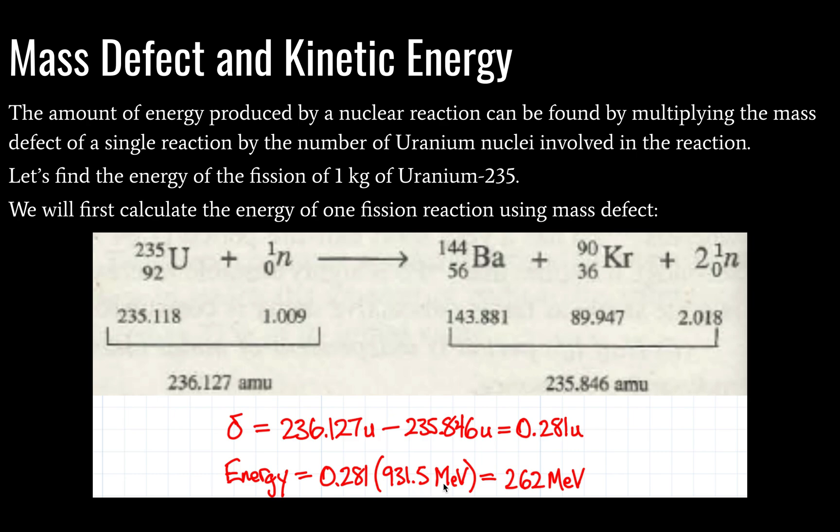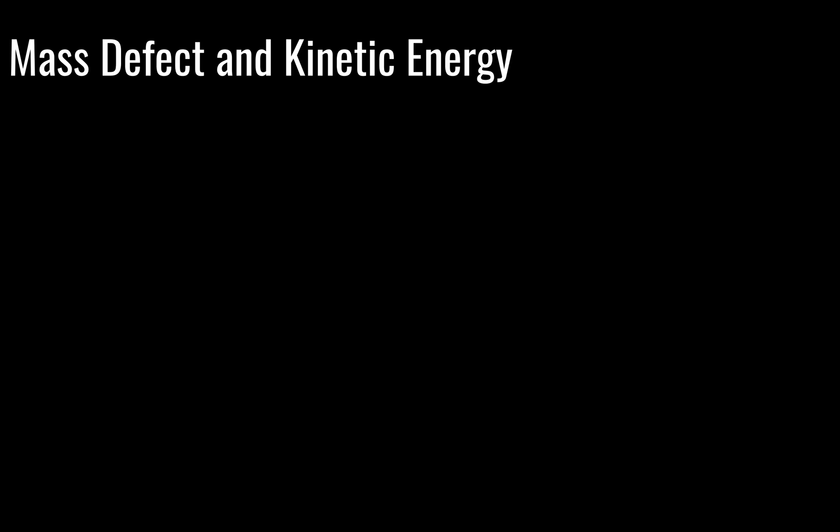So this then is going to give us the energy of fission for one uranium-235 nucleus for this particular reaction. And what we find is that it's about 262 megaelectron volts. And mega, you will recall, is 10 to the sixth power.